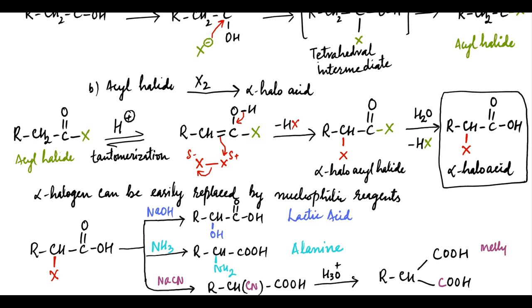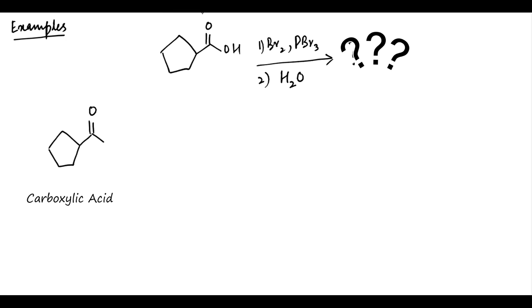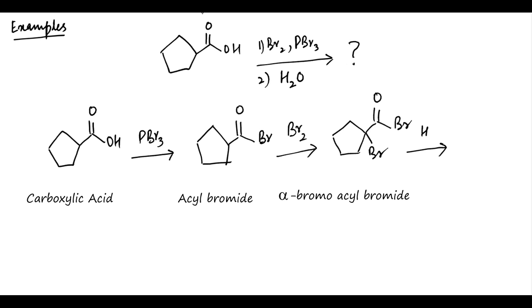Consider this acid as an example. Let us predict the major product when it is heated with bromine in the presence of a catalytic amount of PBr3. Phosphorus tribromide converts the acid into acyl bromide, which on treatment with bromine forms alpha-bromoacyl bromide. This, on hydrolysis, converts the acyl bromide into carboxylic acid with bromine at the alpha position.